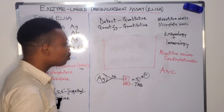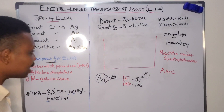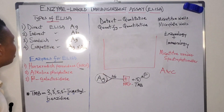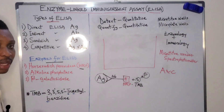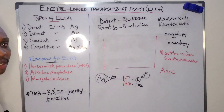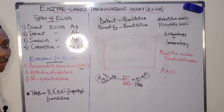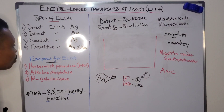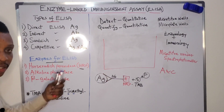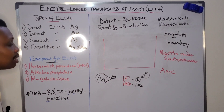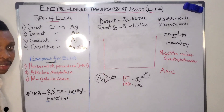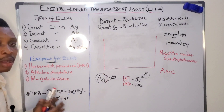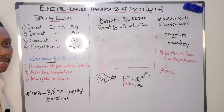There are different types of ELISA: direct ELISA, indirect ELISA, sandwich ELISA, and competitive ELISA. Direct ELISA is used to detect and quantify antigens, while indirect ELISA detects and quantifies antibodies. Sandwich ELISA is also used to detect antibodies, and competitive ELISA is used to detect both antigens and antibodies. Subsequent classes will handle each of these types holistically and more explicitly.